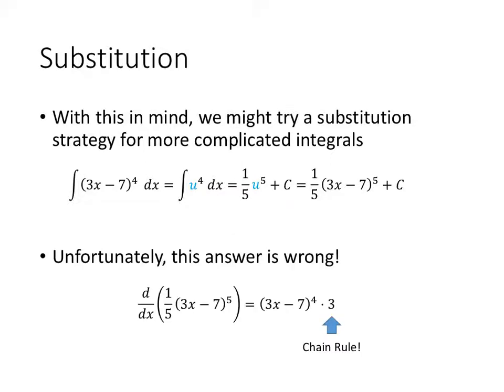But if we try to check that answer by taking the derivative, we find that we don't get the original function that we started with. We get an extra factor of 3 from the chain rule. So what did we do wrong?